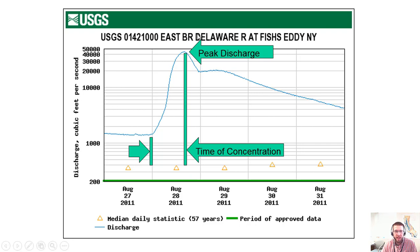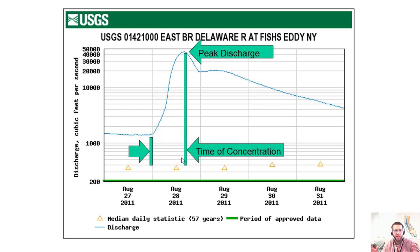The top of the hydrograph is the peak discharge, and many of our practices only need the peak discharge. The time window from when flow at the design point starts increasing to peak discharge is called the time of concentration — the time it takes the furthest raindrops in the watershed to flow all the way down to the design point.